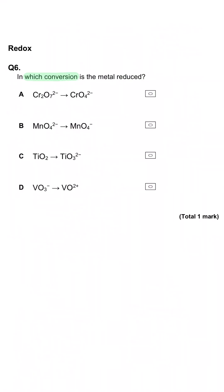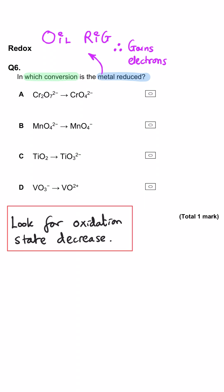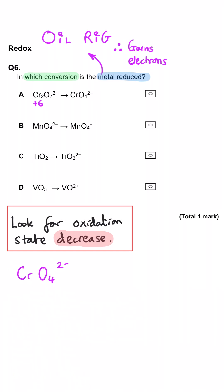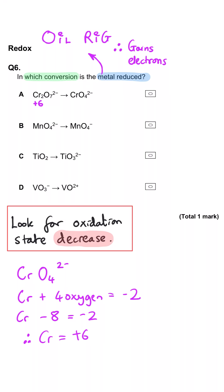In which conversion is the metal reduced? We look at the oxidation states at the beginning and end to see if it has gone down. In Cr2O7 2−, seven oxygens at minus 2 give minus 14, and with an overall charge of minus 2, the two chromiums must total plus 12, so each is plus 6. In CrO4 2−, four oxygens at minus 2 is minus 8, so chromium must be plus 6 — unchanged.